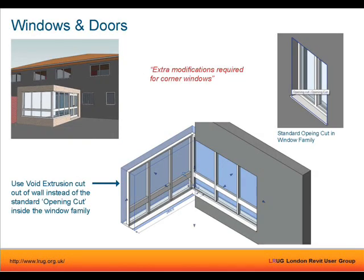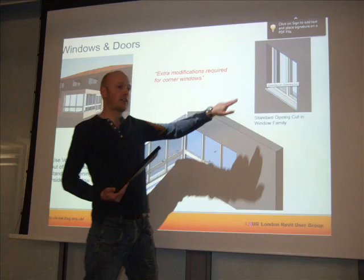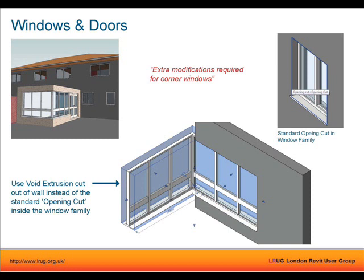Windows are generally pretty standard. But for corner windows, you have to go into the window family and instead of using the typical opening cut in the standard window, you model a void and cut it out of the temporary wall in the family. If you don't do this, the window will only cut one wall — it won't cut the adjacent wall. You'd have to add another opening for the second wall. By going into the family and modeling the void, any wall the family touches will be cut by the void, so you can model it as a single item cutting both walls.